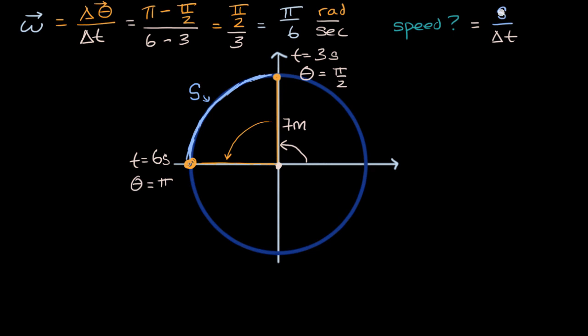But what is our arc length going to be? Well we saw in a previous video where we related angular displacement to arc length or distance, that our arc length is nothing more than the absolute value of our angular displacement times the radius. And in this case, our radius would be seven meters. So if we substitute all of this up here, what are we going to get?